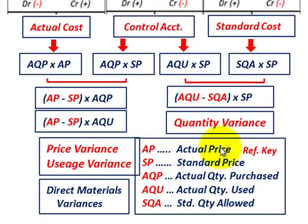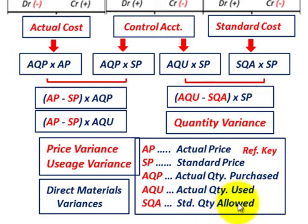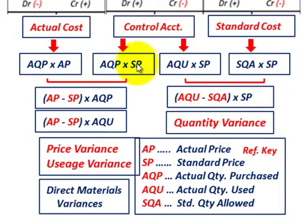The key we'll work off for these formulas: AP stands for actual price, SP stands for standard price, AQP stands for actual quantity purchased, AQU stands for actual quantity used, and SQA stands for standard quantity allowed. So for our actual cost, that would be AQP times AP. For our control accounts, we have AQP times SP, and then AQU times SP. And for our standard cost, we'll have SQA times SP.